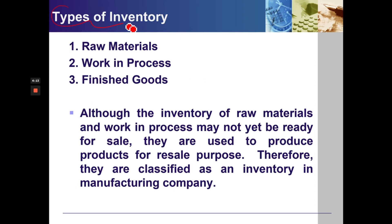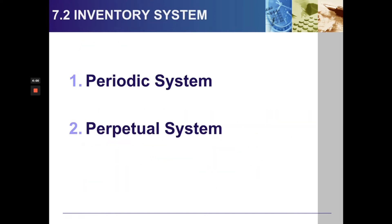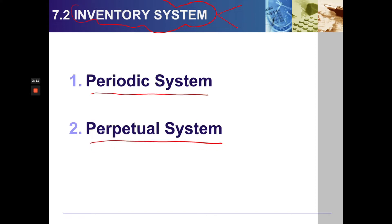There are 3 types of inventory: Raw Materials Inventory, Work in Process Inventory, and Finished Goods Inventory. There are also 2 inventory systems: Periodic System and Perpetual System.